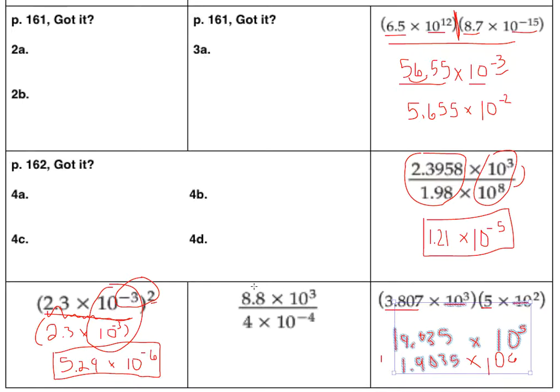Finally, we have a division problem. 8.8 divided by 4 is 2.2. And then we have 3 minus a negative 4, which would be 3 plus 4. So that's 10 to the seventh.